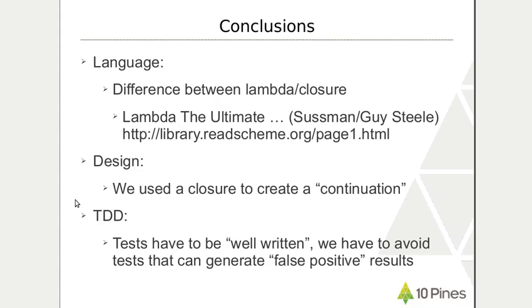So the conclusions are that from the language point of view there is a difference between lambdas and closures. Some languages don't make this difference, some languages do. For example, in C#, closures behave as lambdas of the Ruby language related to the return expression. In Smalltalk, everything is a closure. So different languages have different implementations.